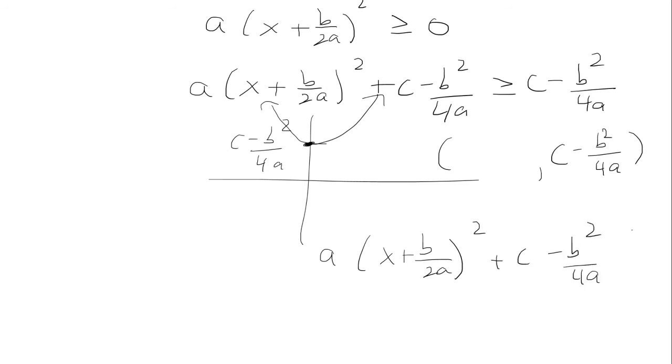Well, notice that this is in the vertex form. This is your y. This is your x. So x has to be negative b over 2a.